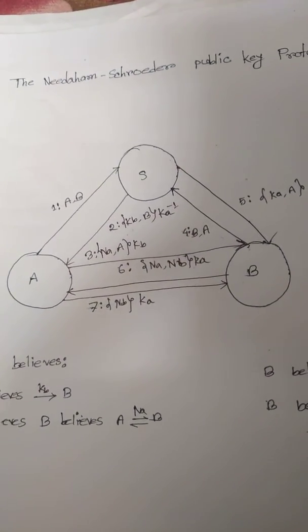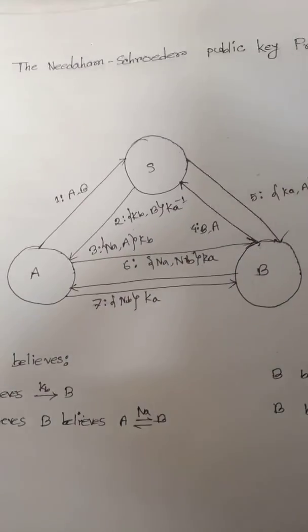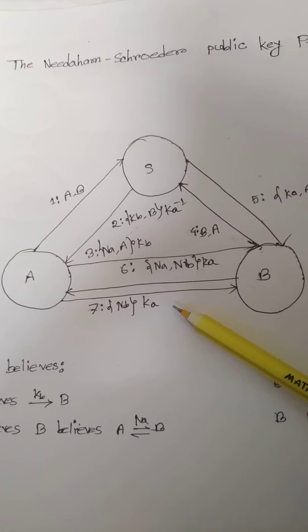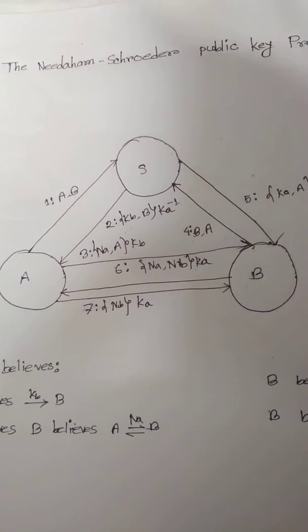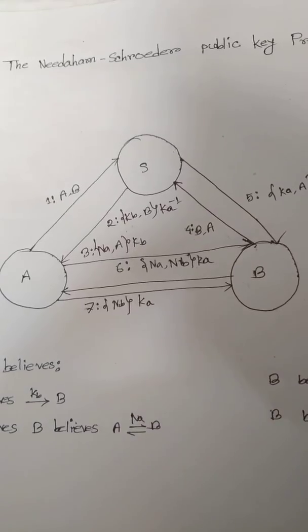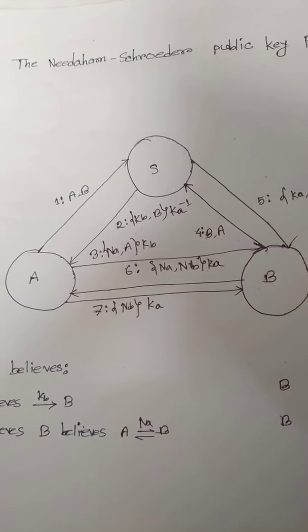In step five, S receives the request and sends A's public key to B, encrypted with S's private key. B decrypts the message and obtains A's public key.